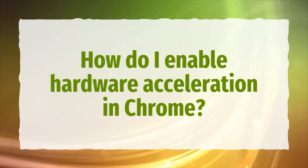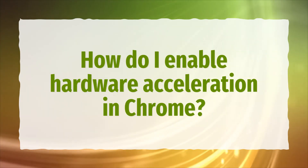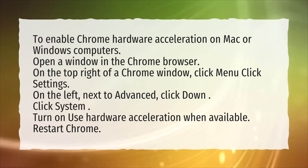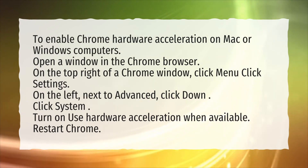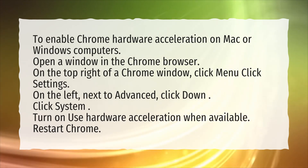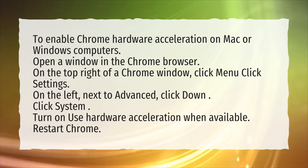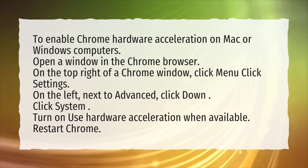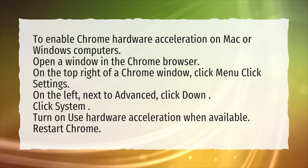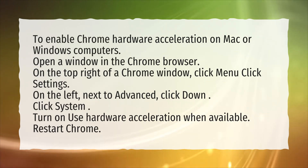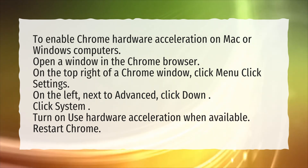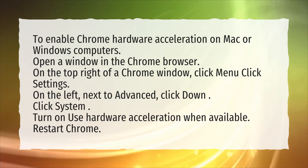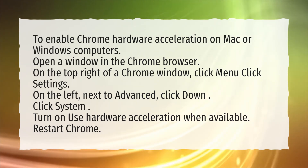How do I enable hardware acceleration in Chrome? To enable Chrome hardware acceleration on Mac or Windows computers, open a window in the Chrome browser. On the top right of a Chrome window, click Menu, click Settings. On the left, next to Advanced, click Down. Click System. Turn on 'Use Hardware Acceleration when available.' Restart Chrome.